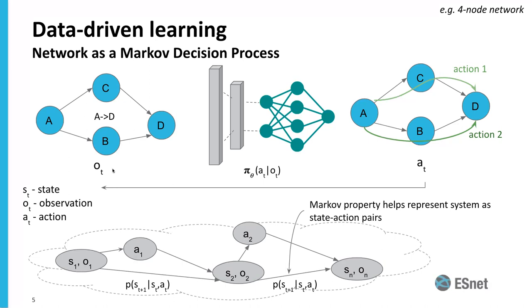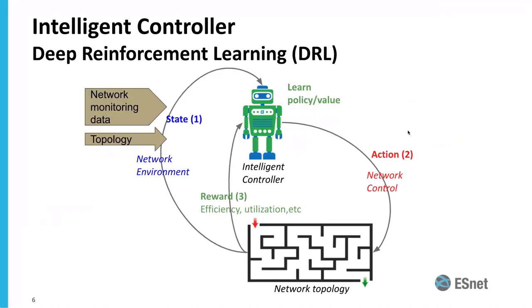On the top you have the observation of the current state. We're training a neural network to learn which particular actions to take — go via C or go via B — to achieve the goal. Based on what it does, it gets a reward to know which action was best. This is the logic we're taking into our AI, Hecate, introducing an intelligent controller based on deep reinforcement learning. The state looks at network monitoring data and current topology. The actions are the control, and rewards we're looking at are efficiency, utilization, and latency. Users can define their own rewards on how they want the network to be optimized.